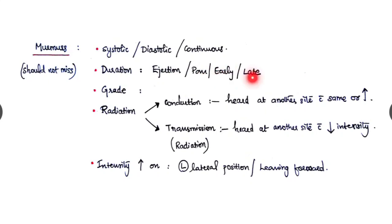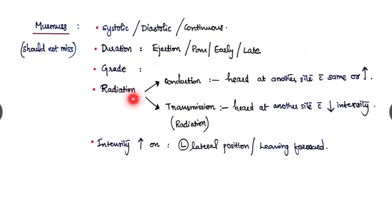Example: ejection systolic murmur or pan-systolic murmur, etc. The grade also we have to check, that we can see later. The radiation of the murmur, the radiation of the murmur can be conduction type or transmission. The transmission is actually called as the radiation, but for common usage, general usage, we use radiation for this conduction.